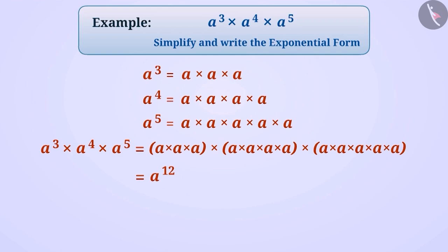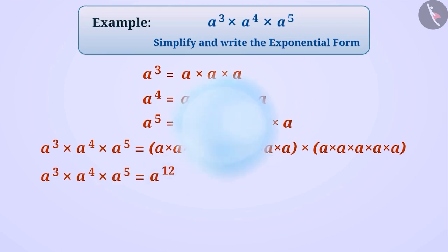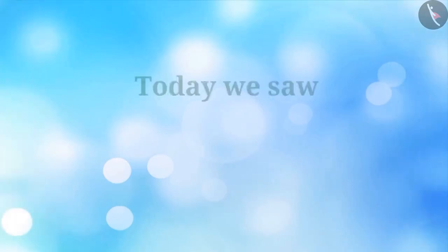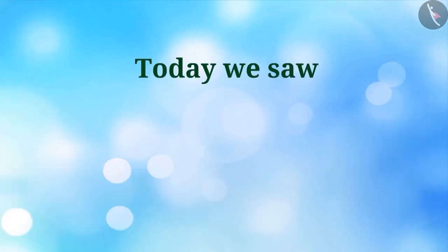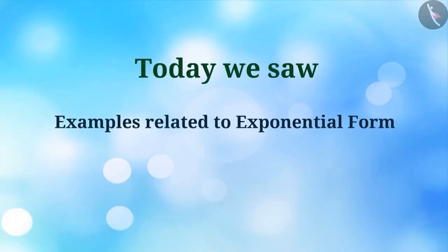So, we can say that a raised to the power of 3 multiplied by a raised to the power of 4 multiplied by a raised to the power of 5 is equal to a raised to the power of 12. Today we saw examples related to exponential form. In the next video, we will see some misconceptions and common mistakes related to this.